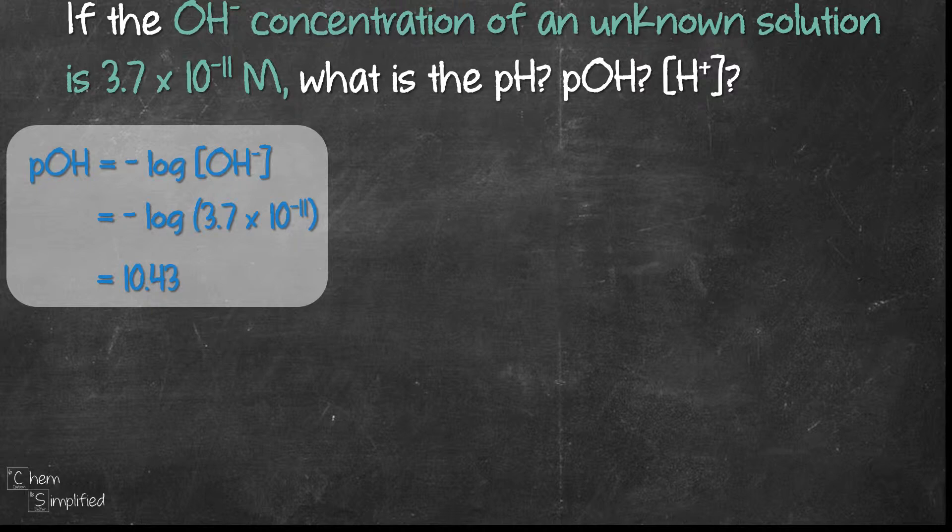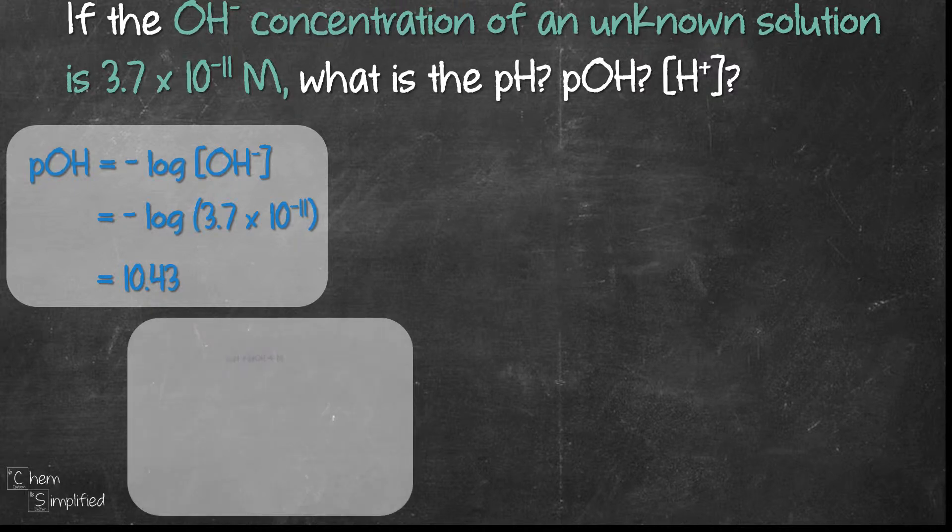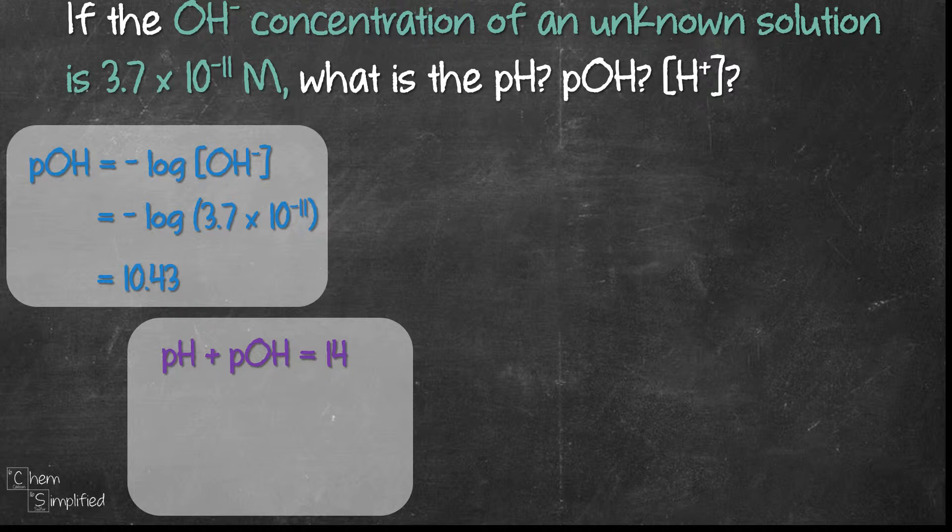Now using this calculated pOH, we can then easily find the value of pH. Using the relationship formula where pH plus pOH is 14, we plug in the value of pOH to the subtraction and we get pH is 3.57.